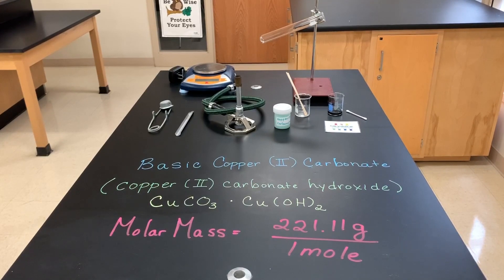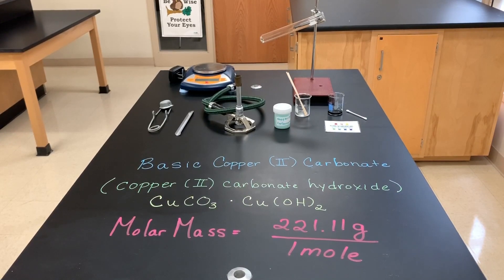In this lab we're going to decompose copper two carbonate, also called basic copper two carbonate. Because we're collecting data and using masses to calculate percent yield, we have to use the correct formula for basic copper two carbonate, which is copper two carbonate hydroxide.